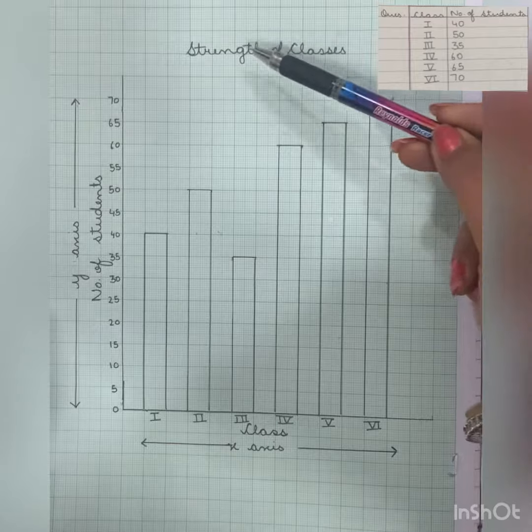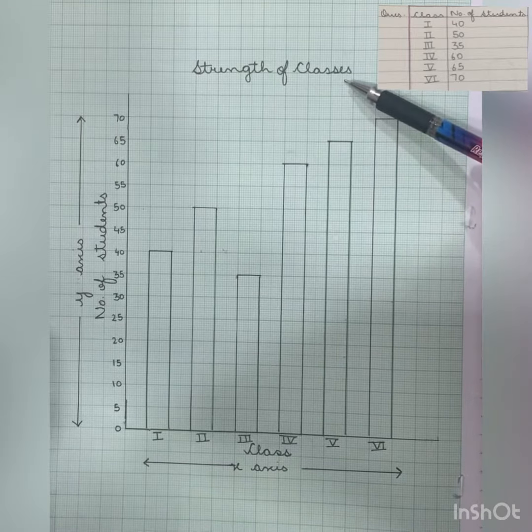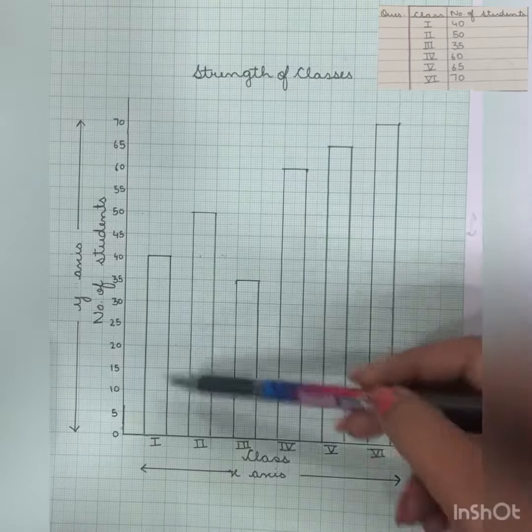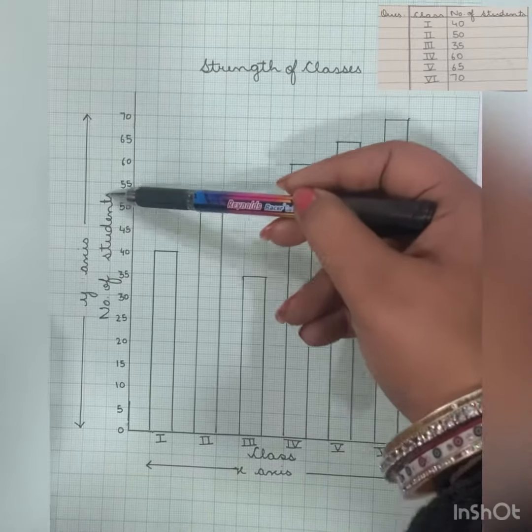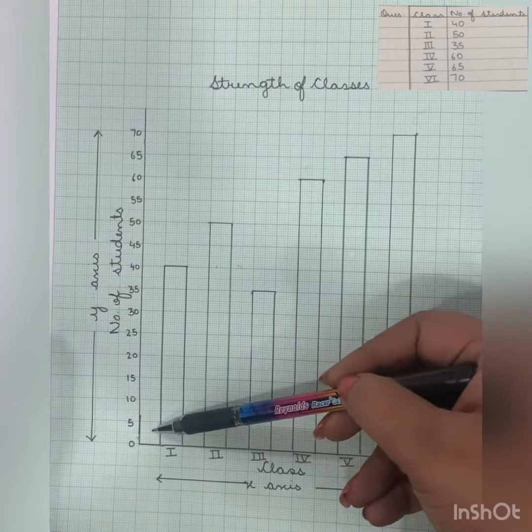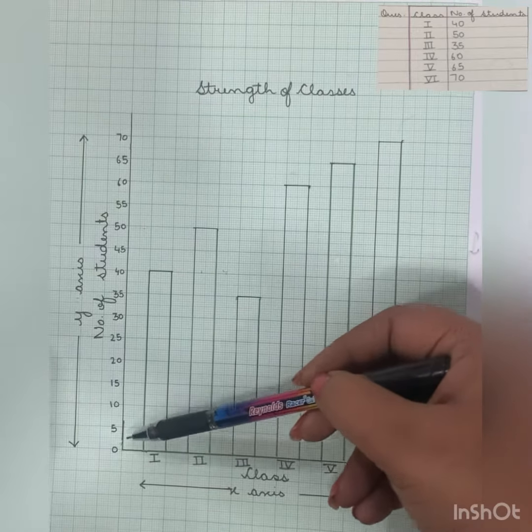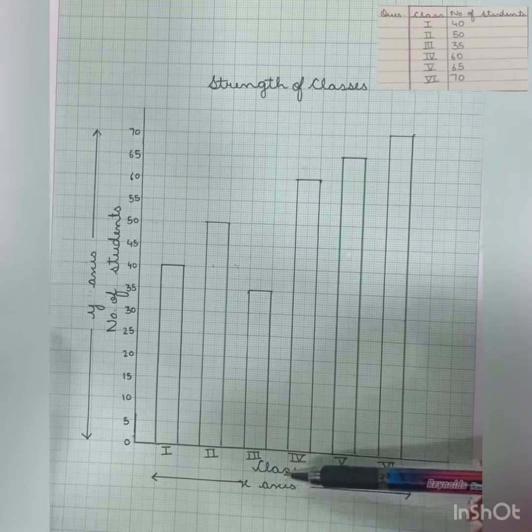Next thing, these two are the labels. We are talking about the number of students. This y-axis is talking about number of students and x-axis is talking about class.